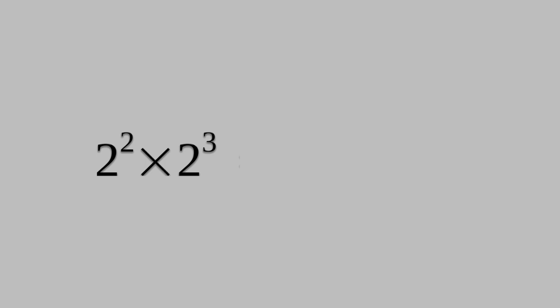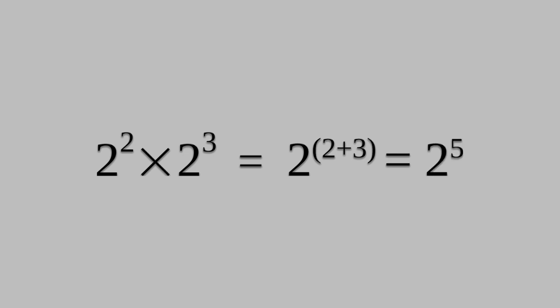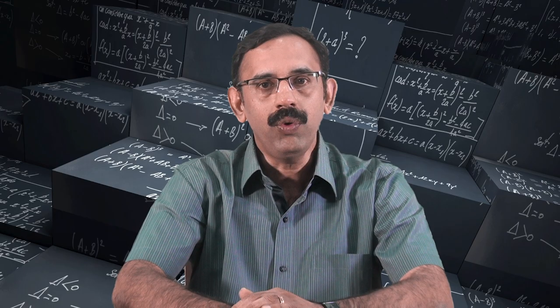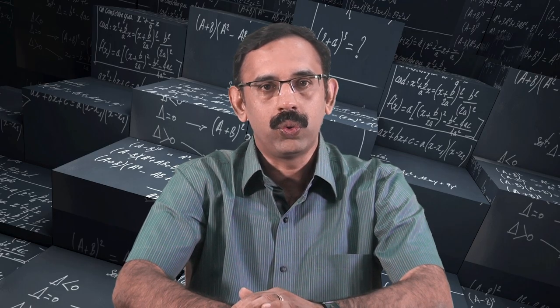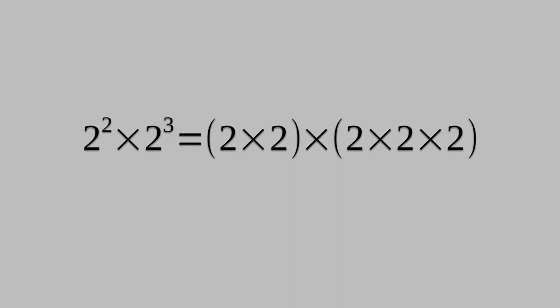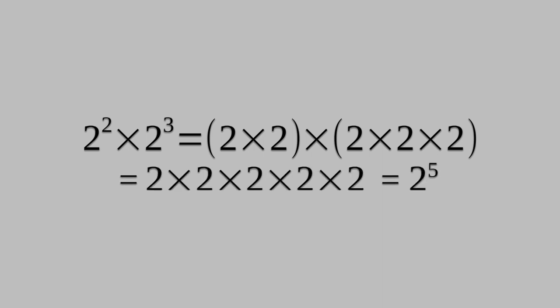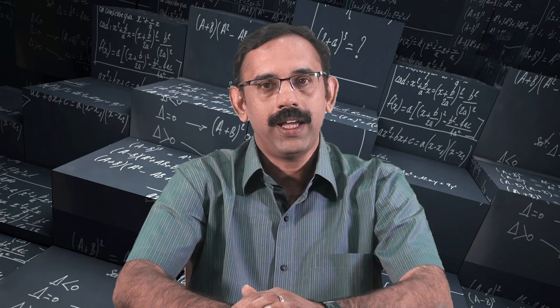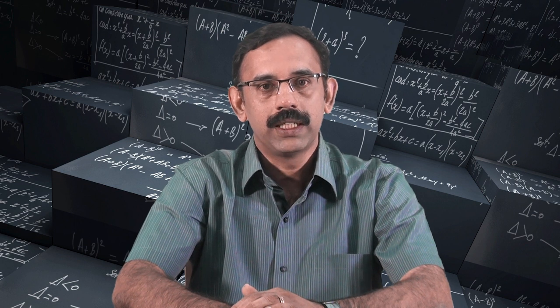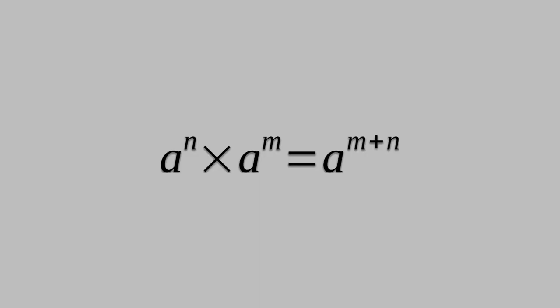How to find 2 raised to 2 times 2 raised to 3? It is 2 raised to 2 plus 3, which is equal to 2 raised to 5. We get this because 2 raised to 2 times 2 raised to 3 is 2 times 2 times 2 times 2 times 2, which is 2 raised to 5. Hence, if n and m are positive integers and a is any non-zero number, a raised to n times a raised to m is equal to a raised to m plus n.